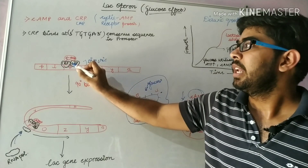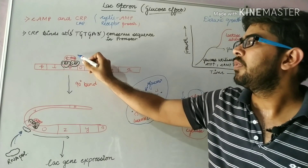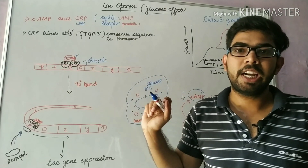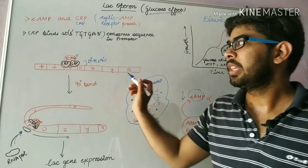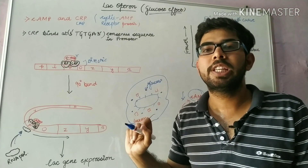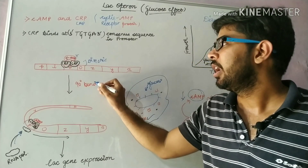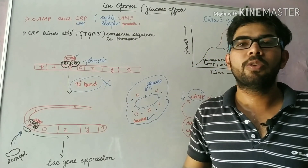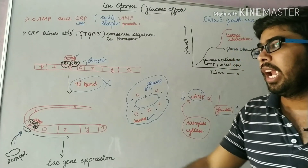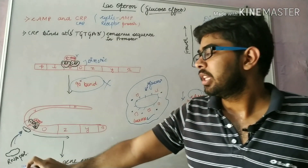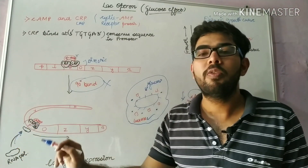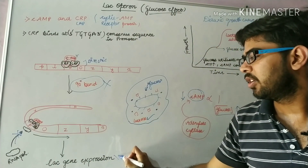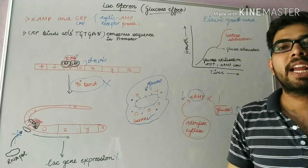When cyclic adenosine monophosphate is not found in the cytoplasm of the bacteria, it will not be able to bind to the CRP protein. There will be no bending of the lac operon gene at 90 degrees, no binding of RNA polymerase, and there will be no expression of the lac gene.